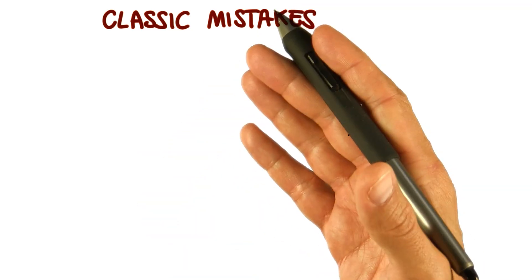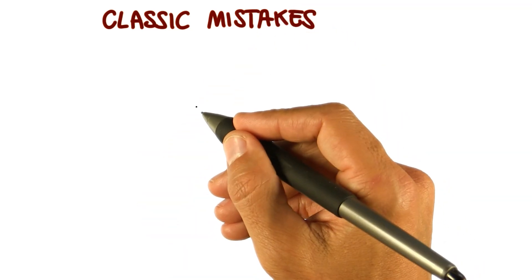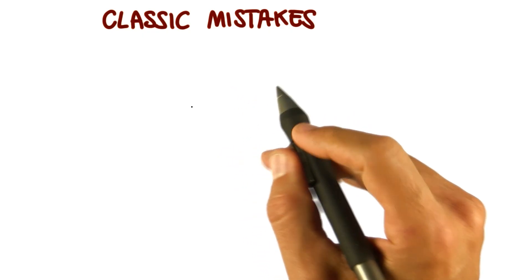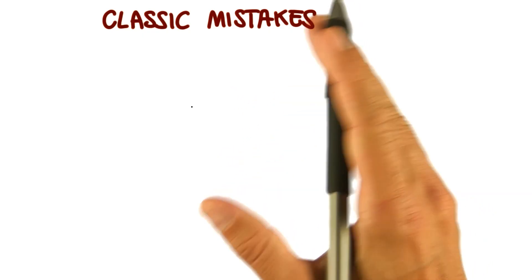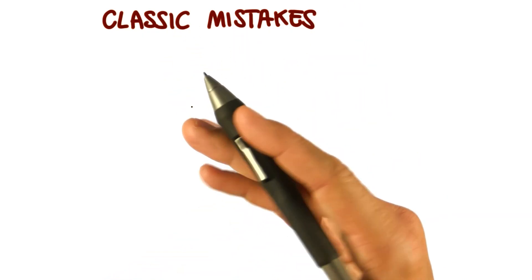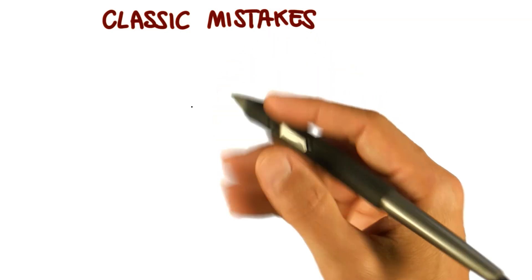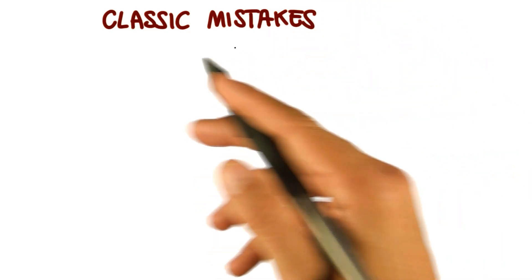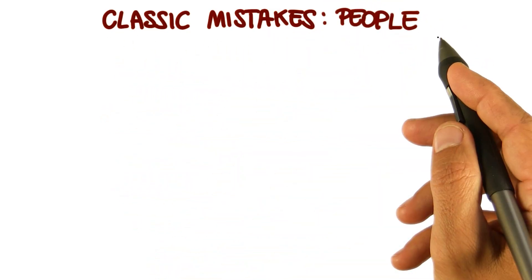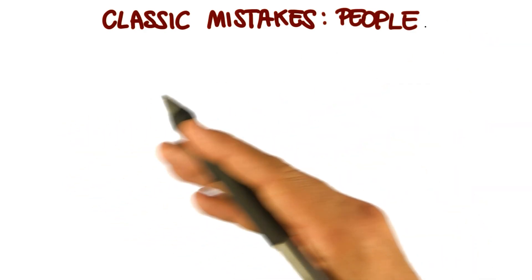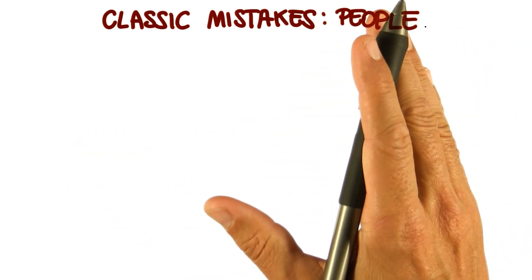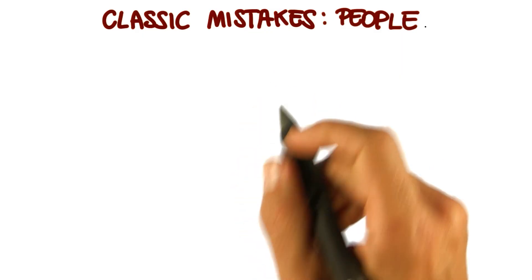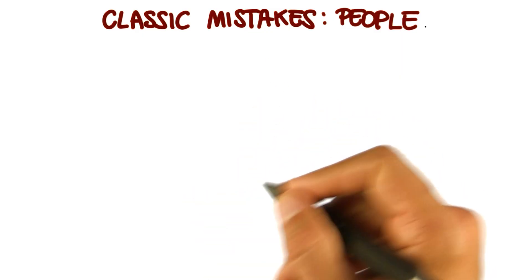Now we get to the final part of the lesson. In this part, I want to talk about well-known ineffective development practices. These practices, when followed, tend to lead to predictably bad results. So let's look at some examples of these classic mistakes. We're going to start with mistakes involving people. There is a long list, so I'm going to discuss just a few of those mistakes, and I'm going to point you to more information on this topic in the class notes.